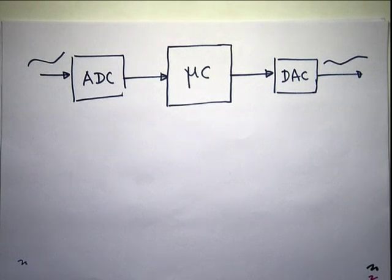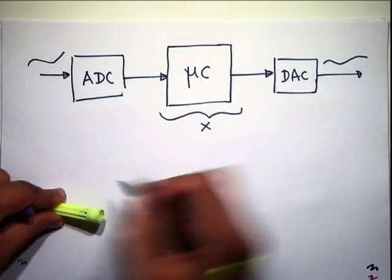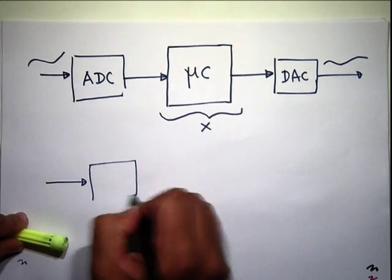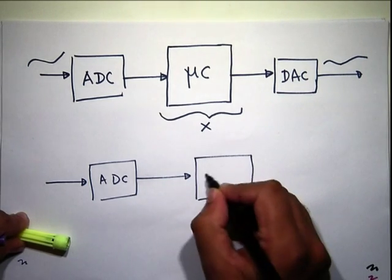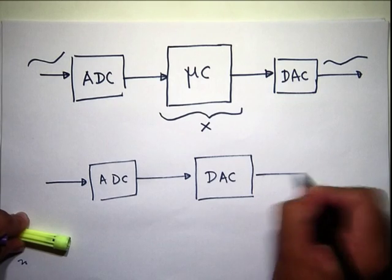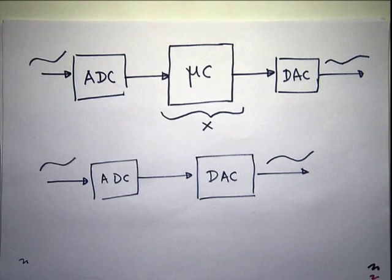If you take the microcontroller part out completely, you just have ADC — quantized signal — DAC and the output. You must have done this in one of your experiments, I think experiment number three: take an analog signal, do ADC on it, produce bits indicative of the analog value, then reconstruct it with the DAC. The difference here is that you stick a microcontroller in between — this is experiment number five.